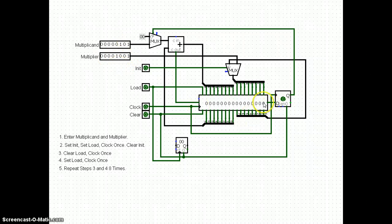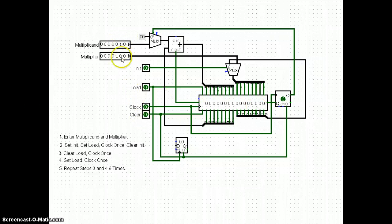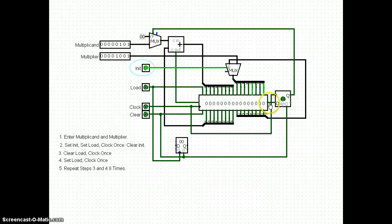We've got the multiplier and we've got this product register. This is a pretty fancy register — it's a 16-bit register because I've got two 8-bit operands. It's also a shift register, so I can load in at each time, at each location, and I can also shift over. The multiplier gets copied into the bottom half of the product, and that's going to slowly be shifted out.